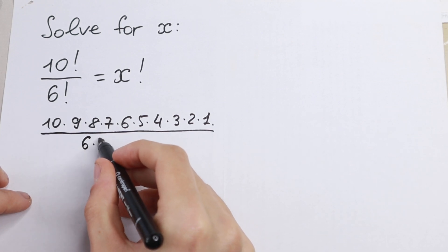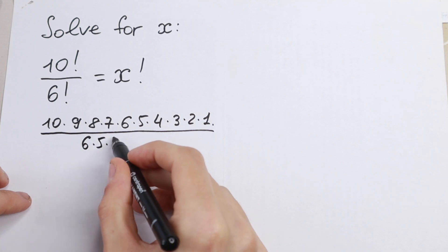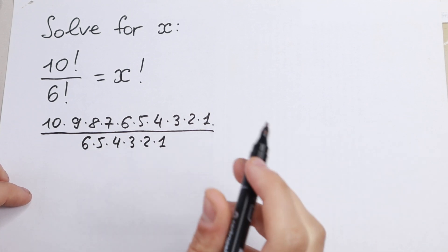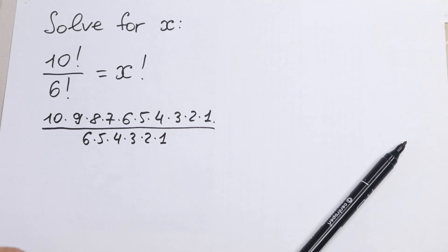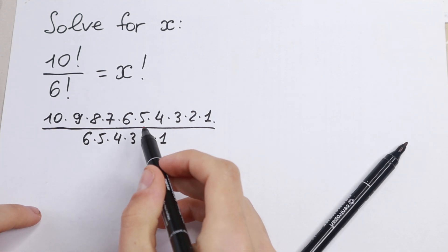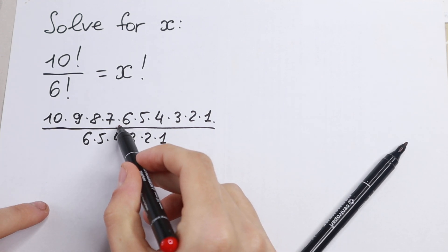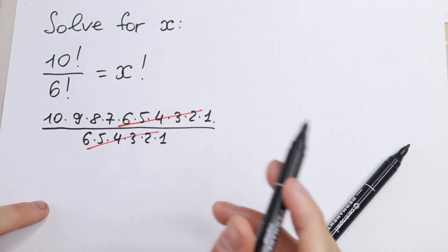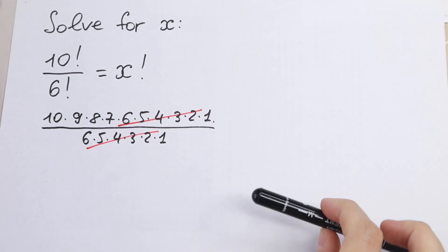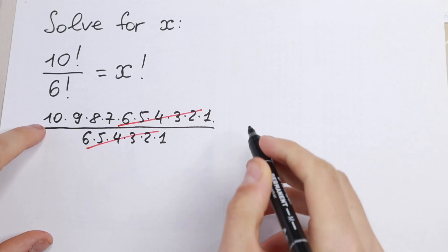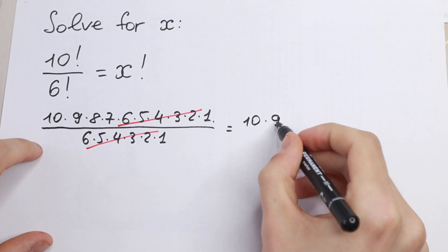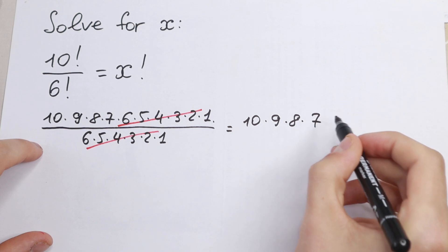6 factorial is 6 times 5 times 4 times 3 times 2 and times 1. As you can see we have the same product in our numerator and in our denominator, so we can easily cancel it. As a result we have this interesting product: 10 times 9 times 8 and times 7.